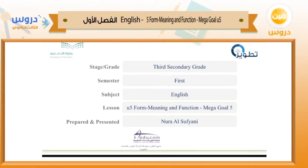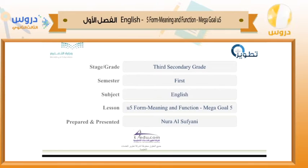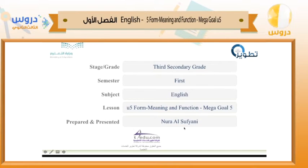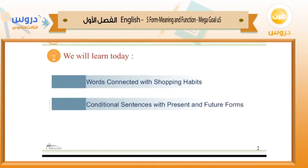Hello students. This lesson is targeted at secondary grade, first semester English language. Our lesson today is Unit 5 — Form, Meaning and Function — from Mega Goal 5, prepared and presented by Nora Sofiani. Welcome, and let's start. Today we'll learn words connected with shopping habits and conditional sentences with present and future forms.